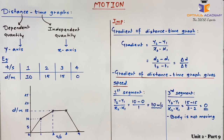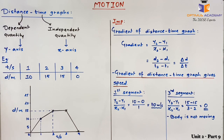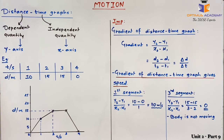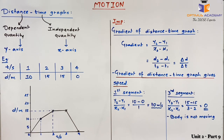Here we are going to talk about a specific type of motion graph in our syllabus: the distance time graph. Note that distance is a dependent quantity — it always takes time to cover some distance — but time is an independent quantity, meaning the body may or may not cover distance, but time will not stop. As time is independent it is represented on the x-axis, and distance being dependent on time is represented on the y-axis.